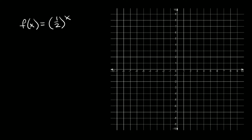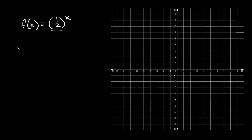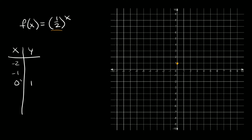Let's try one more: f(x) = (1/2) raised to the x. Our b value is 1/2, which is between 0 and 1, so this represents exponential decay. We expect the graph to slope downward. To graph it, we make an x-y table. We already know (0, 1), and we'll use x = -2, -1, 1, and 2.